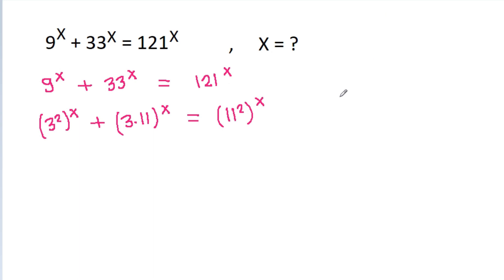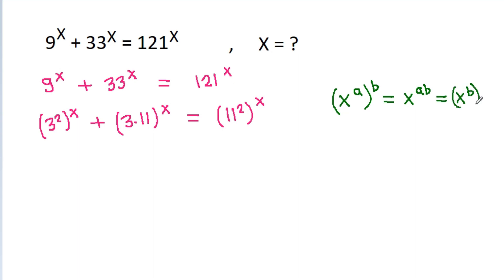We use the exponent rules: x^(a^b) = x^(ab) = x^(b^a), and (a·b)^x = a^x · b^x.